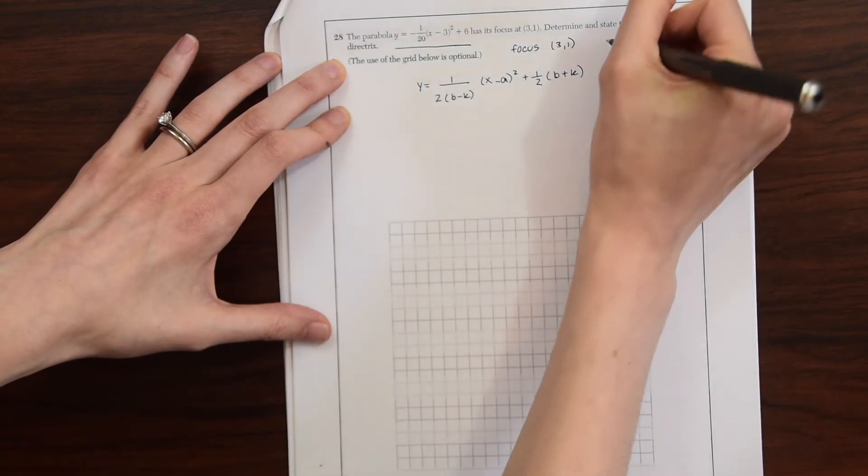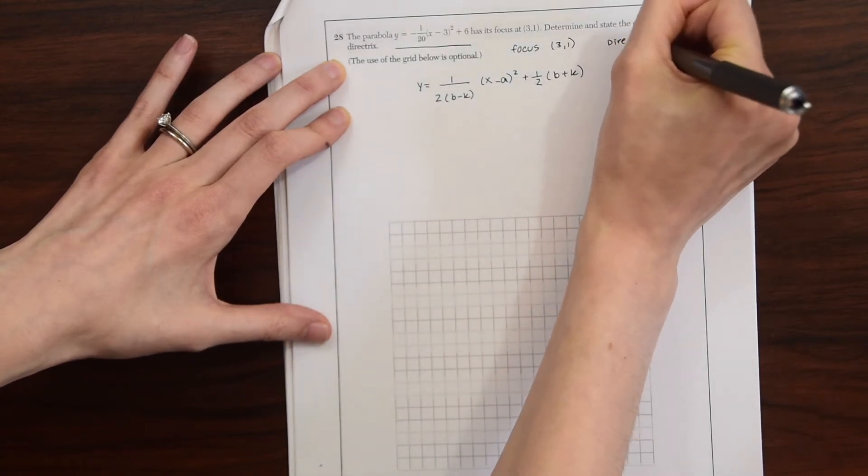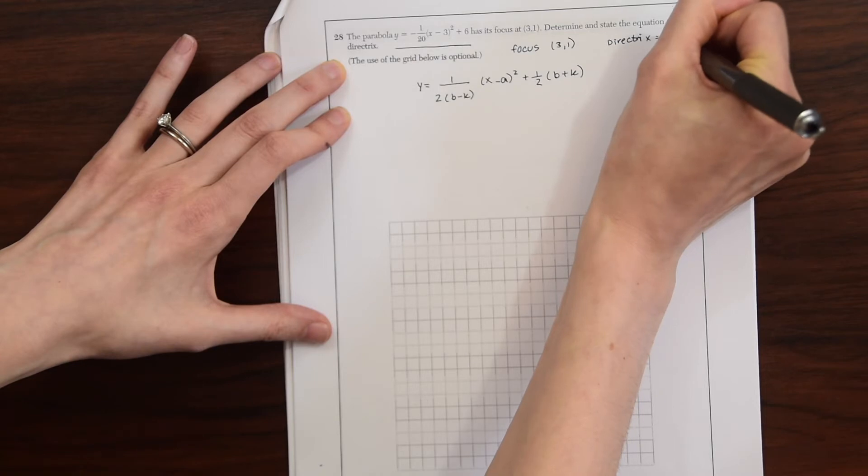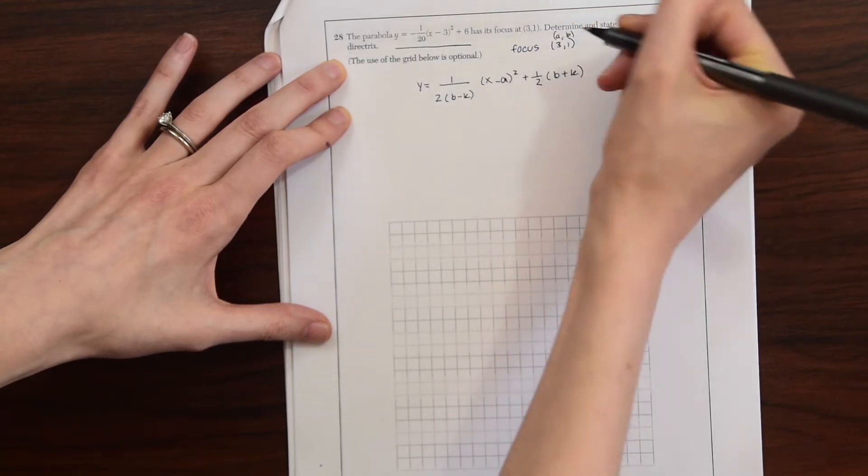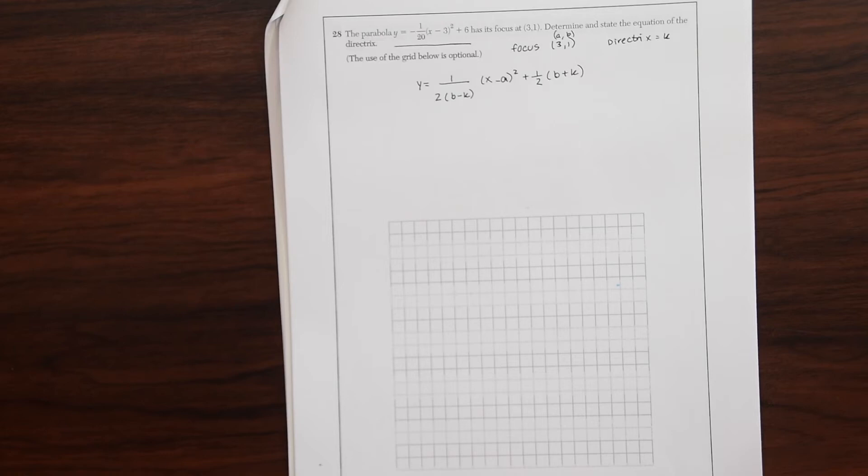And so the directrix is x equals k, which we don't know, which is what we're trying to find, and the focus is a, b. So based on that, we can actually figure out what k is.